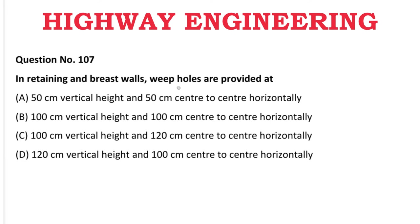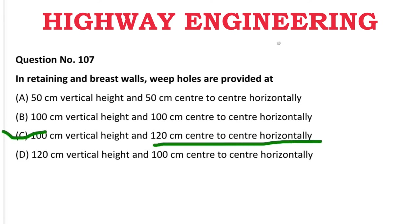Next question: In retaining and breast walls, weep holes are provided at — A: 50 cm vertical height and 50 cm center-to-center horizontally, B: 100 cm vertical height and 100 cm center-to-center horizontally, C: 100 cm vertical height and 120 cm center-to-center horizontally. The correct answer is C, 100 cm vertical height and 120 cm center-to-center horizontally.